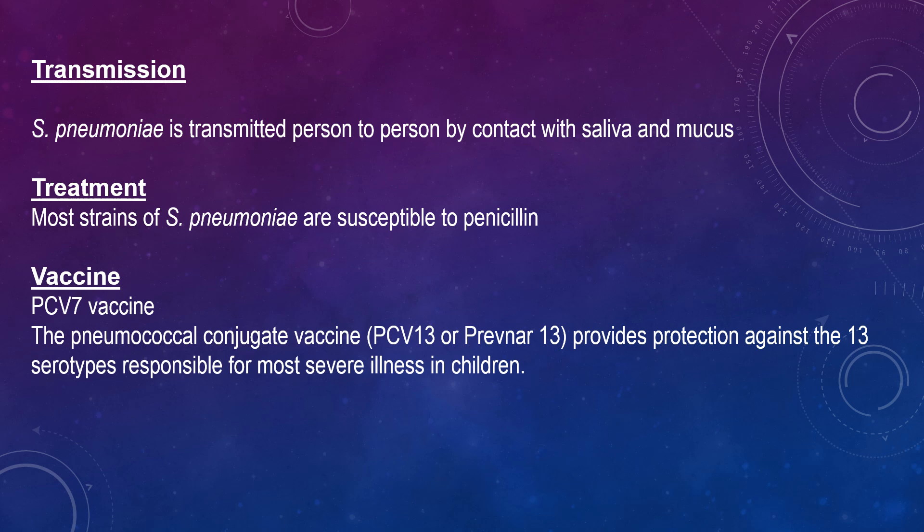Wrapping up: Streptococcus pneumoniae is transmitted person to person by contact with saliva and mucus. Most strains are susceptible to penicillin; however, resistance is quite common and 15% of invasive pneumococcal isolates are resistant to penicillin in some parts of the world. Regarding vaccines, the PCV-7 and various other types are very good at preventing severe disease. There is also the PCV-13, known as Prevnar-13 — the pneumococcal conjugate vaccine — which protects against 13 serotypes responsible for most severe illness in children.